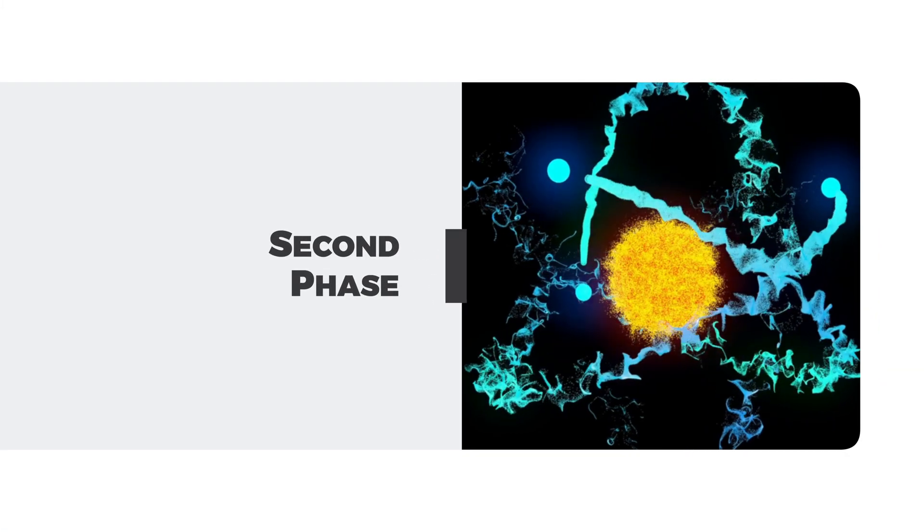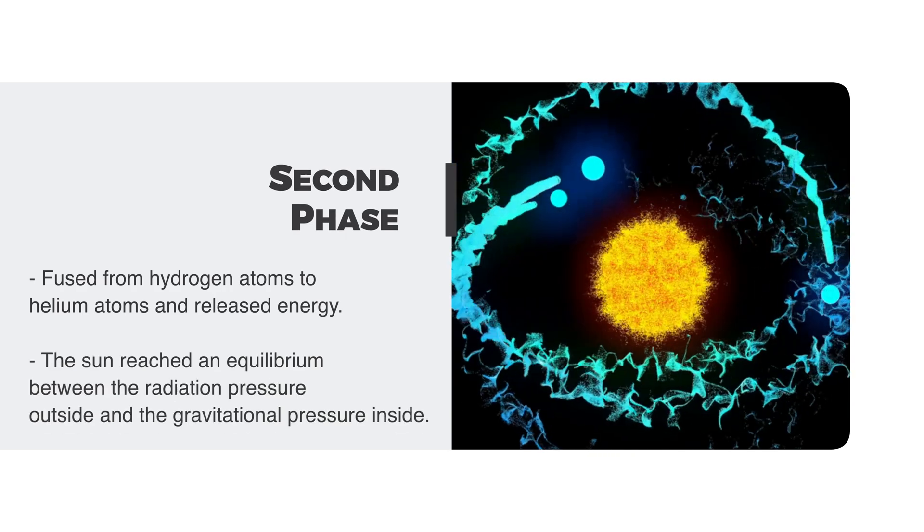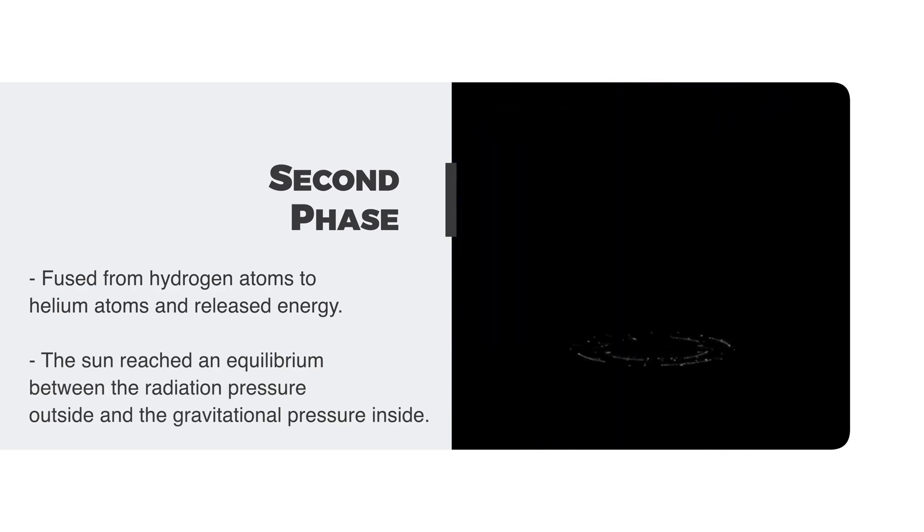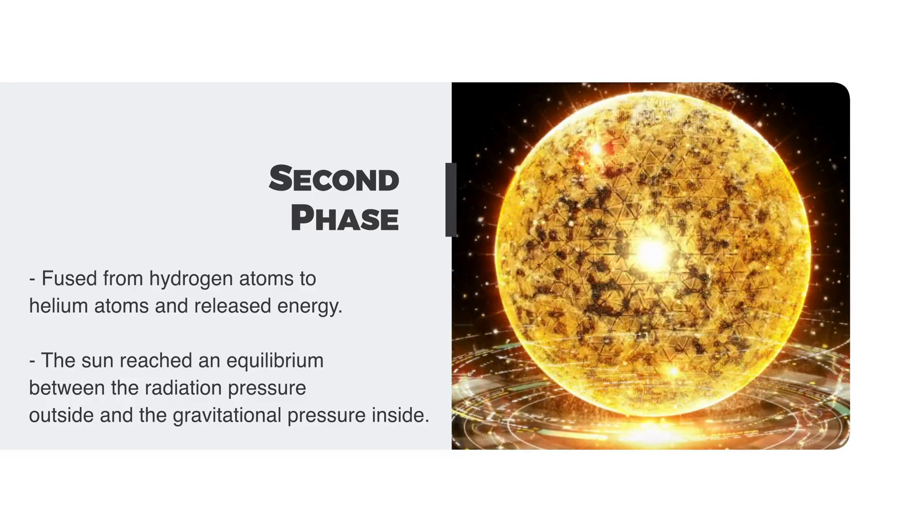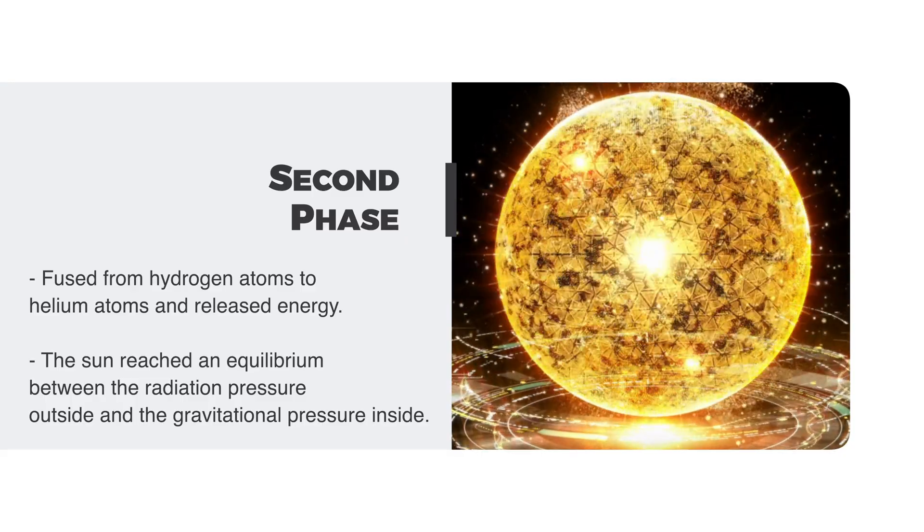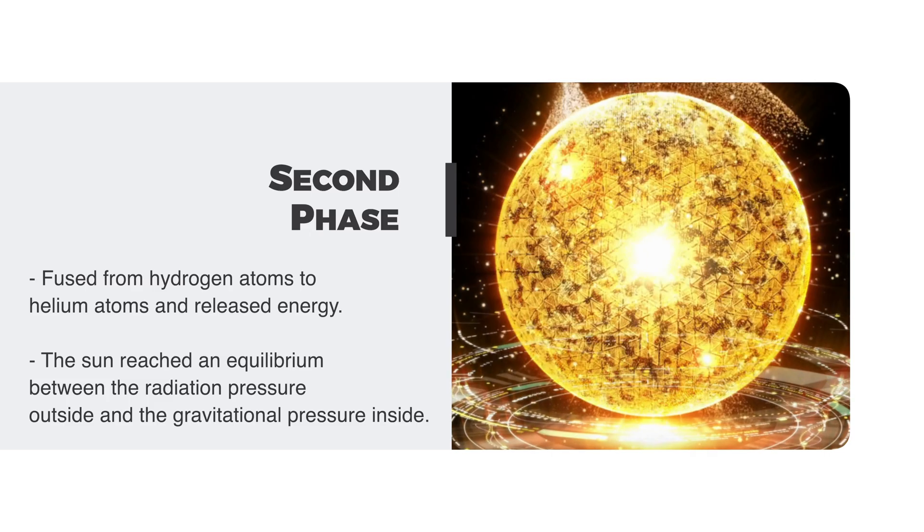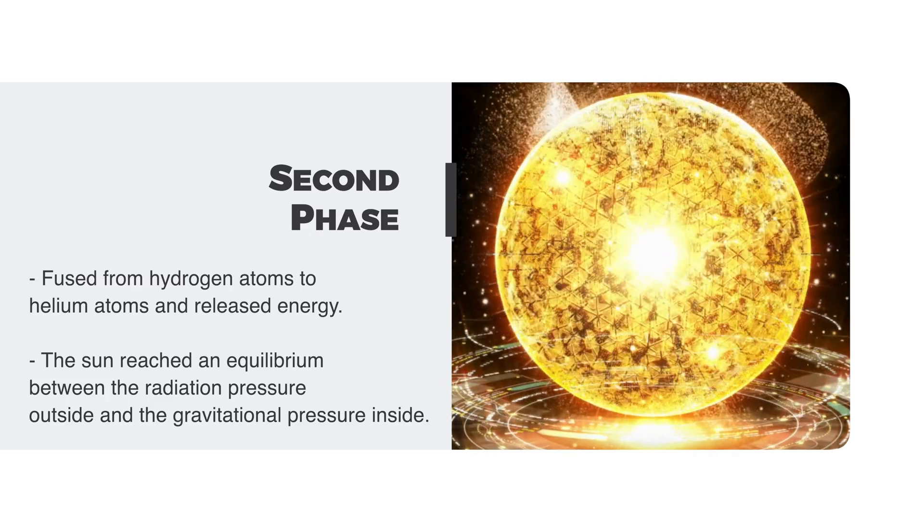The second phase was the onset of nuclear fusion inside the Sun's interior after several tens of millions of years. Hydrogen atoms fused to form helium atoms, releasing energy. The Sun achieved a balance between outward radiation pressure and inward gravitational pressure.